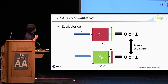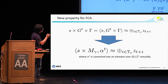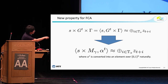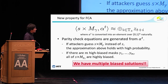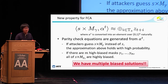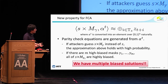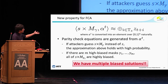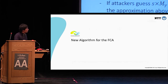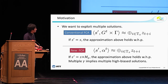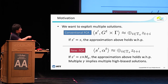Using this technique, we can change the linear approximation: instead of S being the high-bias secret, S prime equals S * M_gamma is the high-bias secret. This means if attackers guess S * M_gamma instead of S, the approximations hold with high probability. Assuming there are many high-bias linear masks, all of them being highly biased, we have multiple biased solutions that we want to exploit.